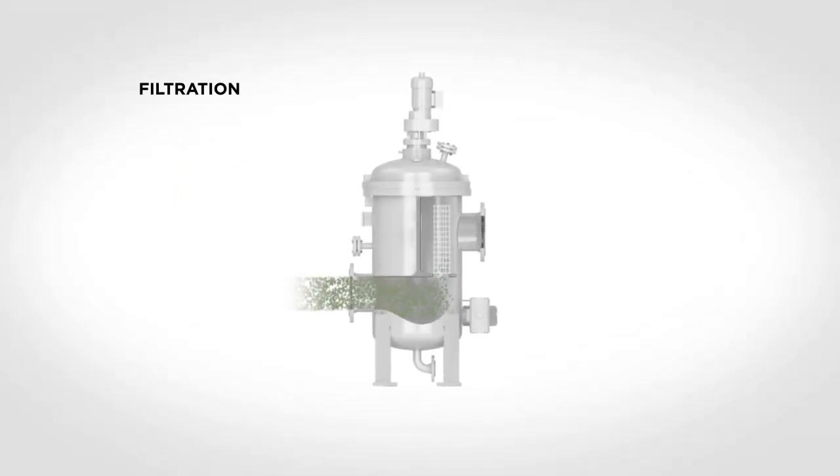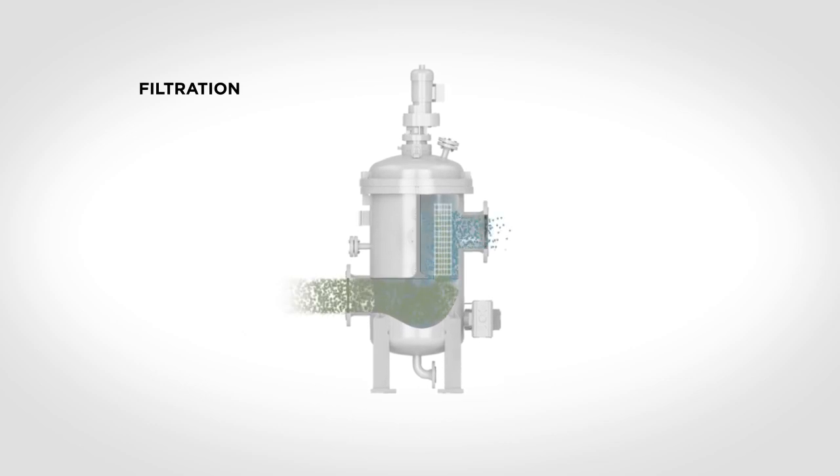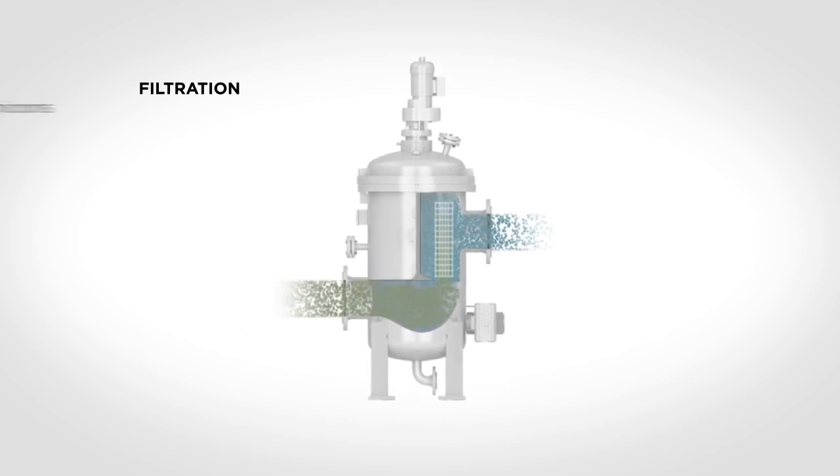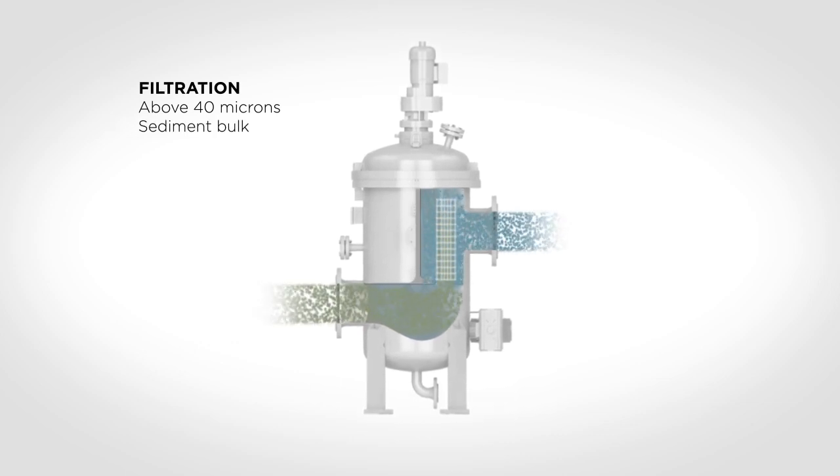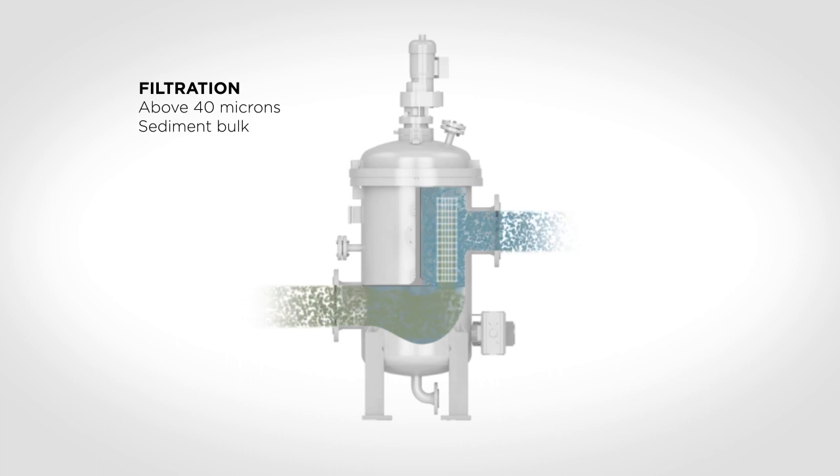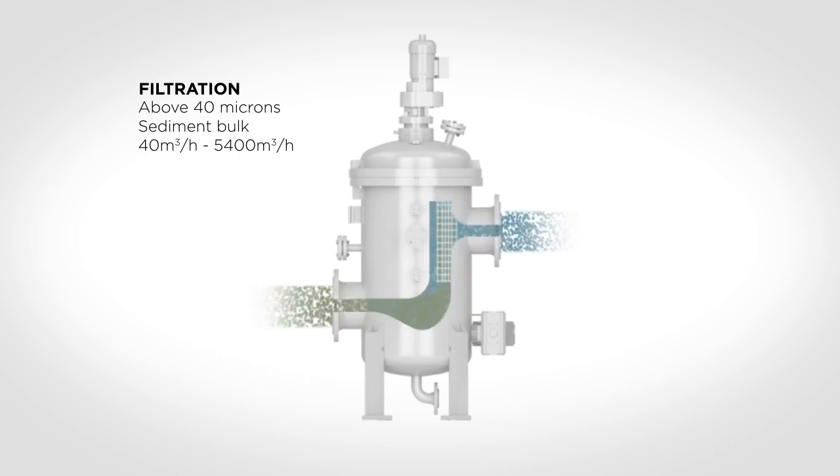The first treatment step is pressurized filtration, which removes most of the organisms above 40 micron, as well as the bulk of the sediment in the water. The filter for pressurized systems is available in sizes ranging from 40 cubic meters per hour to 5,400 cubic meters per hour.